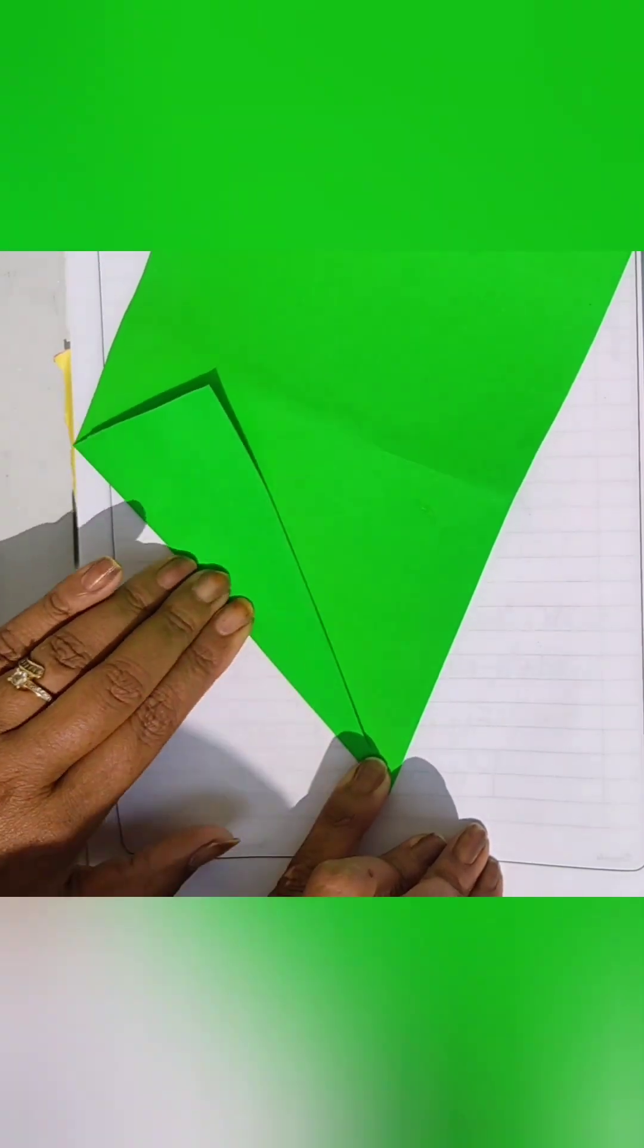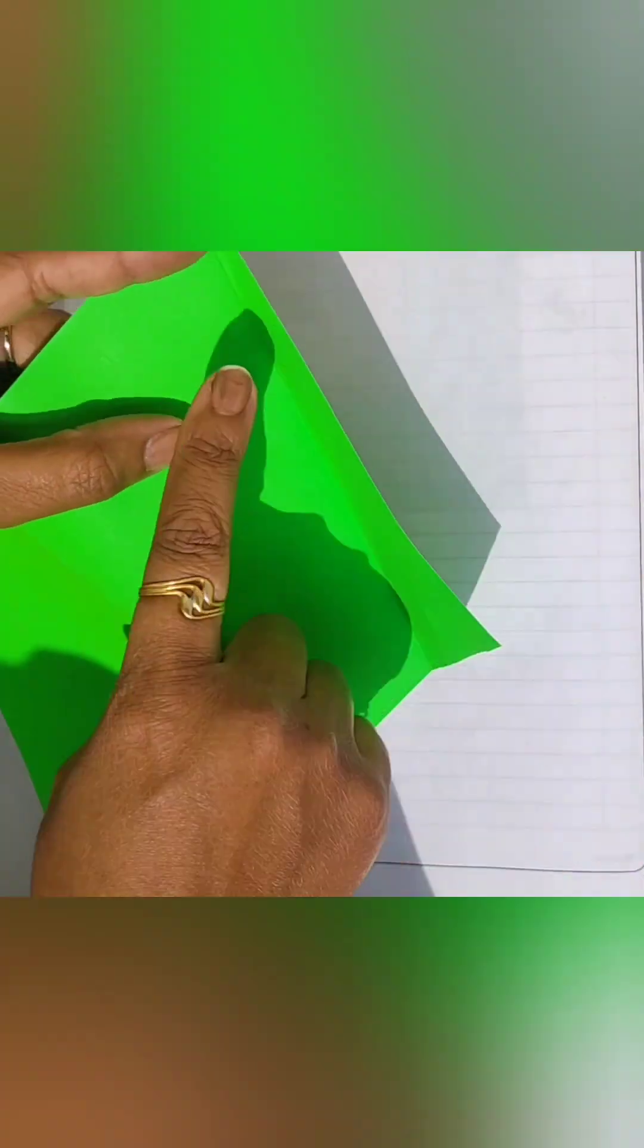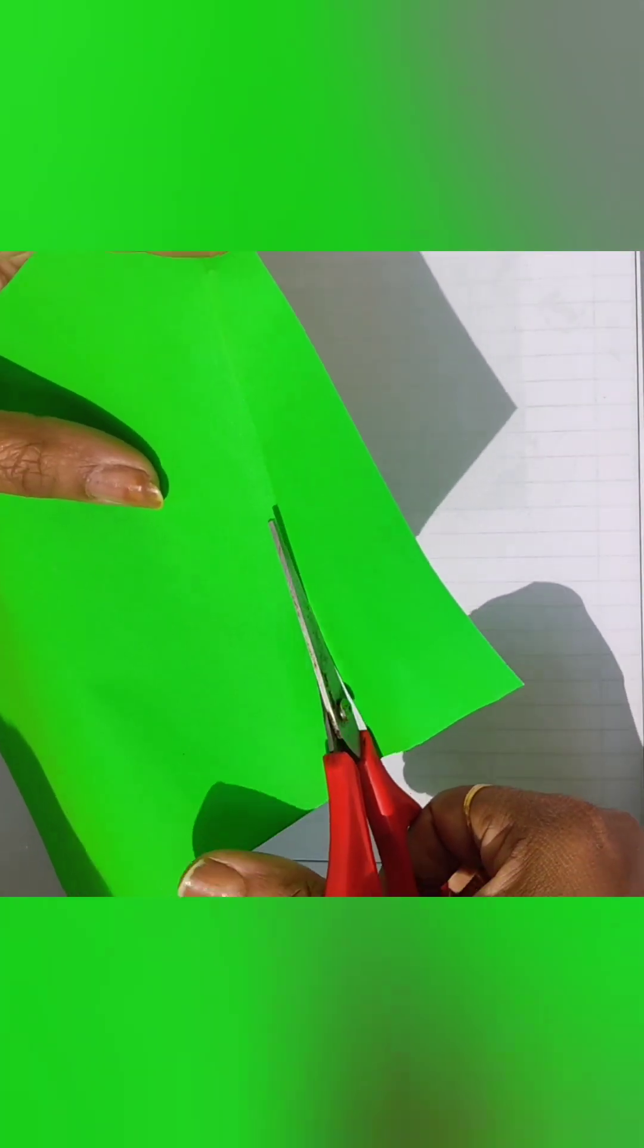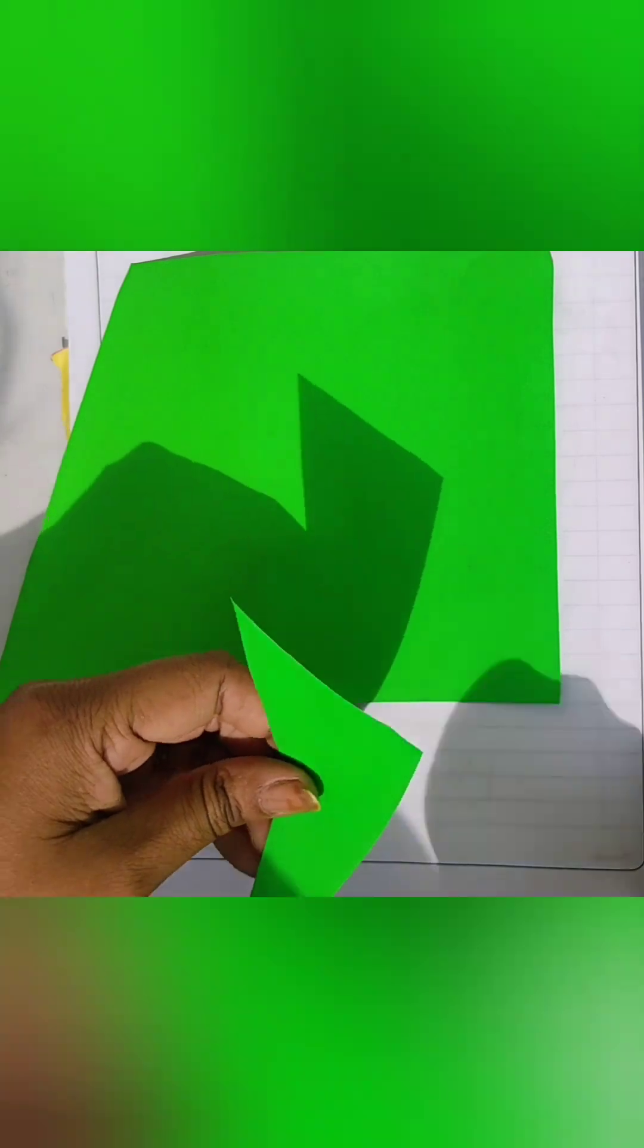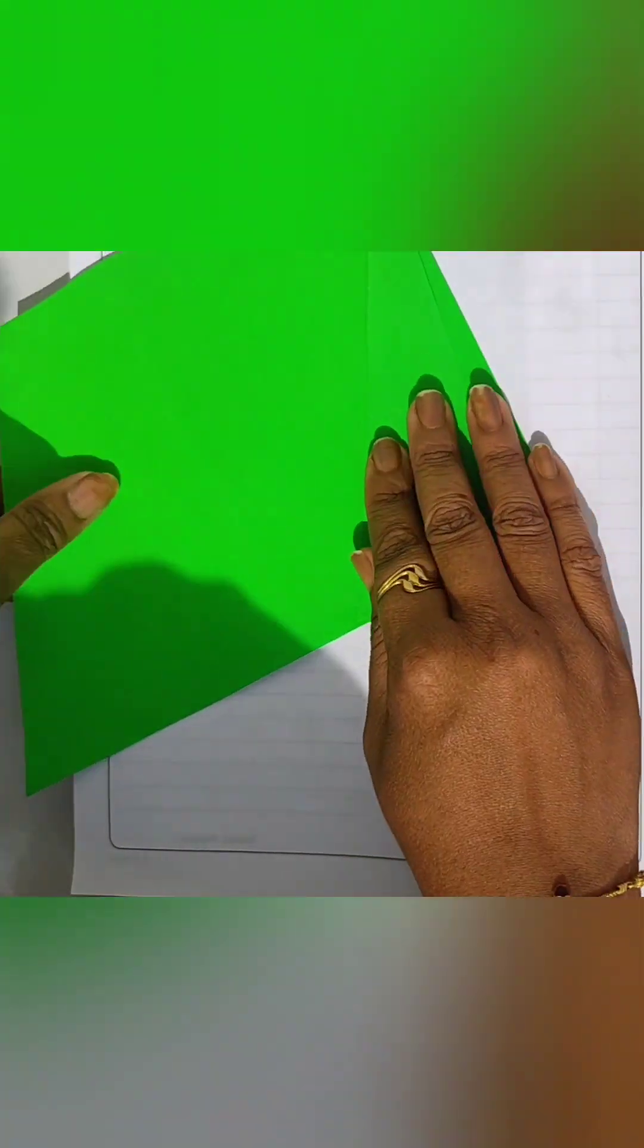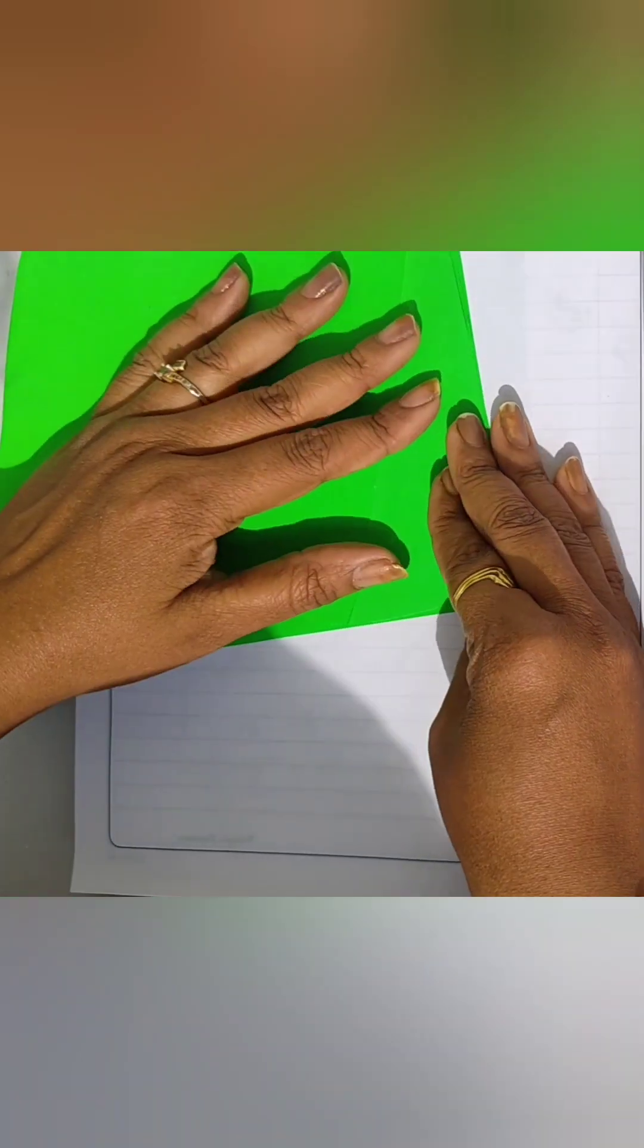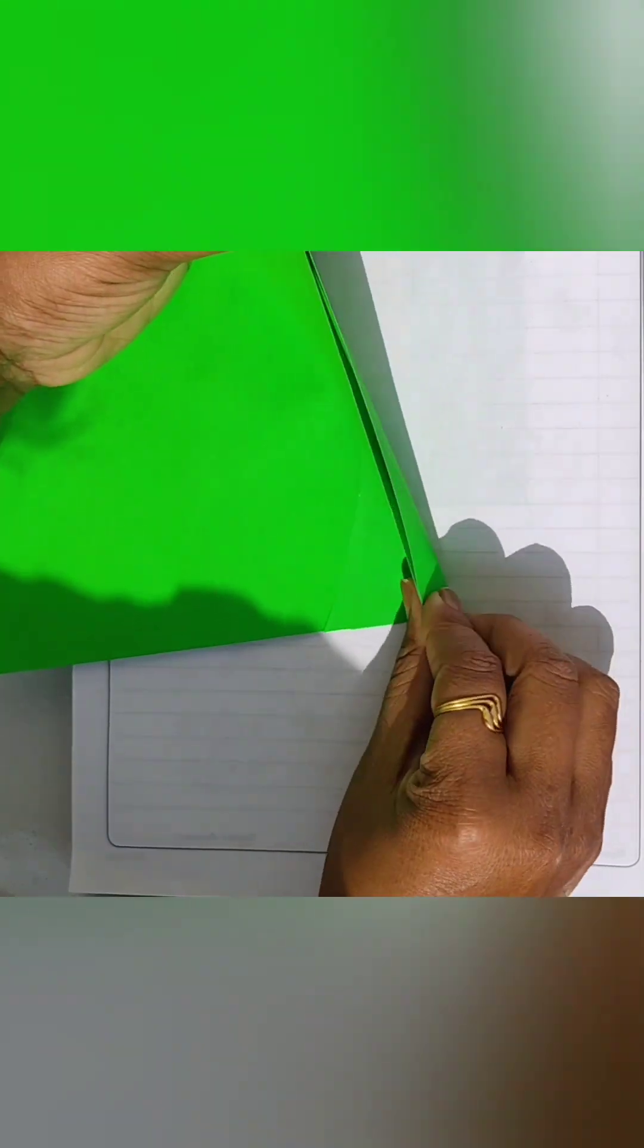First of all, for the first one I have taken here the green color paper and fold it in a triangular size and cut from its crease. From this rectangular size of paper we are going to prepare a parallelogram. Now fold it along its length side, yes, in this way, and then make a crease here and cut it from the crease.